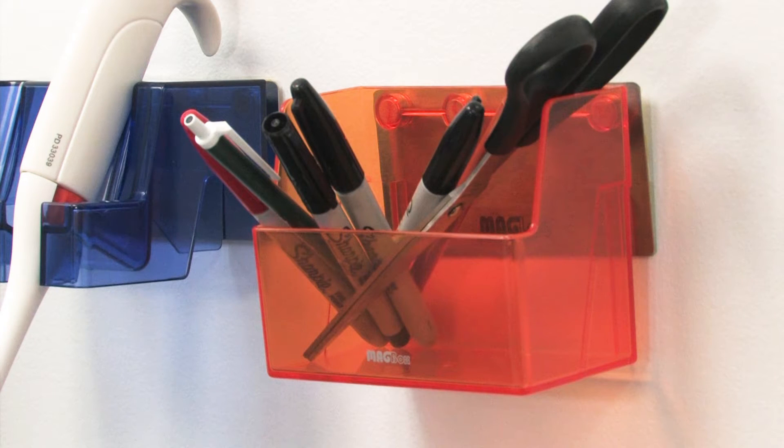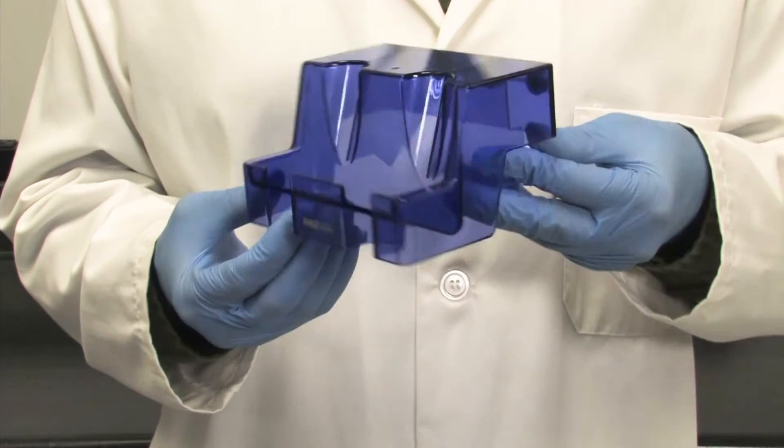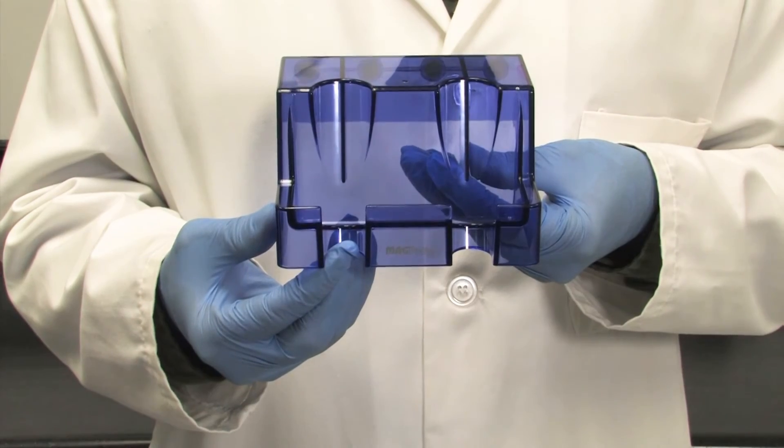The MagBox holds miscellaneous items such as pens, pencils, and notes. Each rack is made of robust lightweight ABS plastic in bright and fun translucent colors.